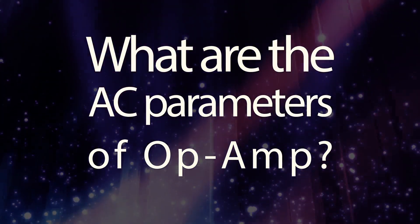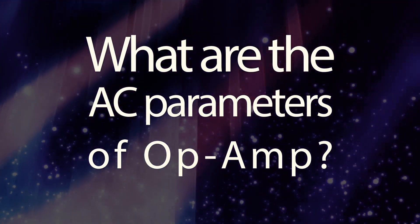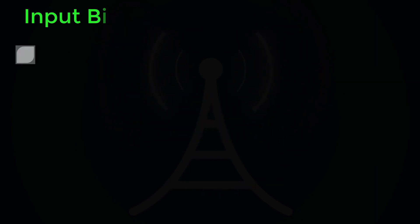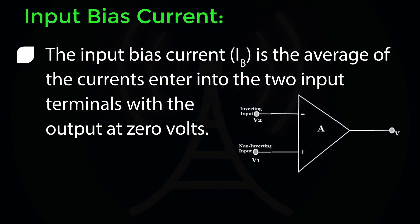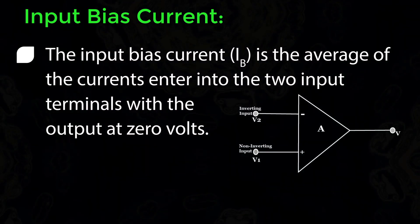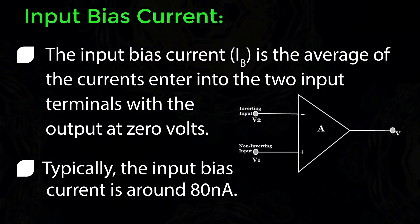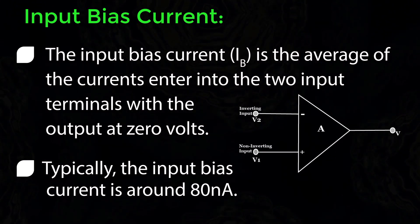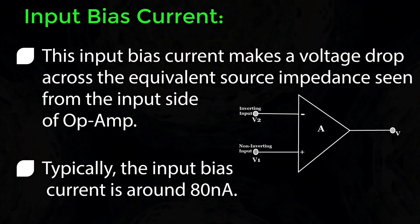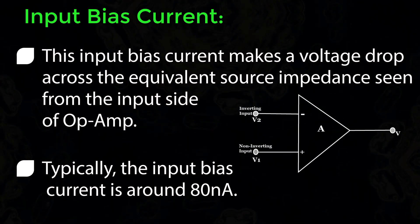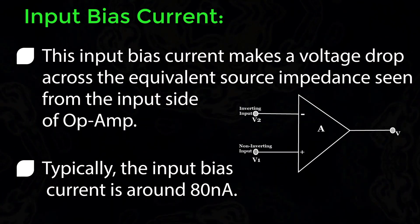What are the AC parameters of OPAMP? Input Bias Current: The input bias current IB is the average of the currents entered into the two input terminals with the output at 0 V. Typically, the input bias current is around 80 nA. This input bias current makes a voltage drop across the equivalent source impedance seen from the input side of the OPAMP.